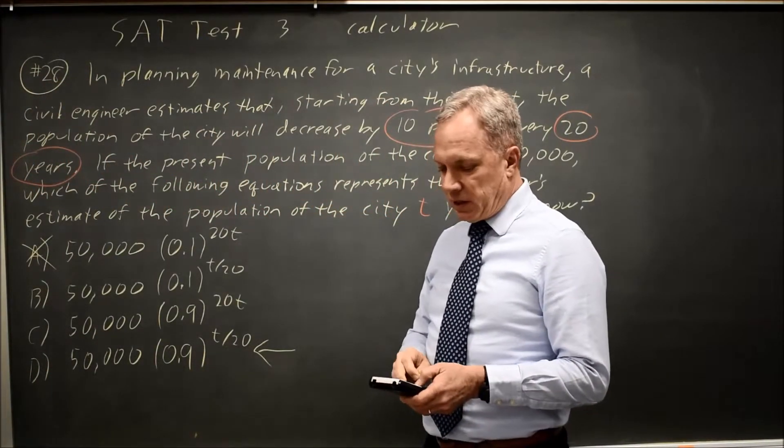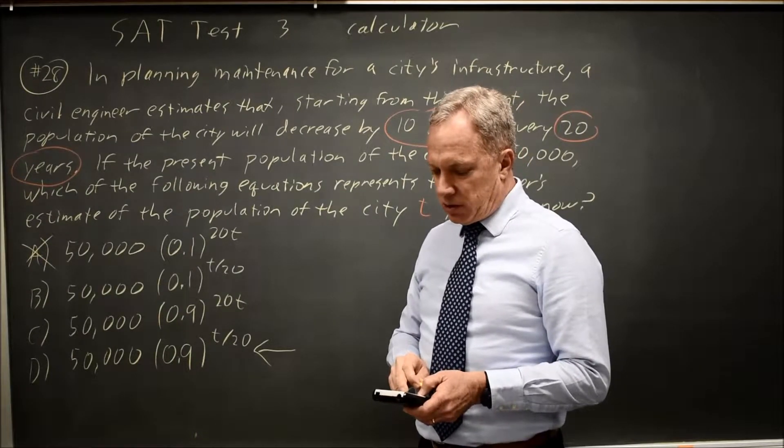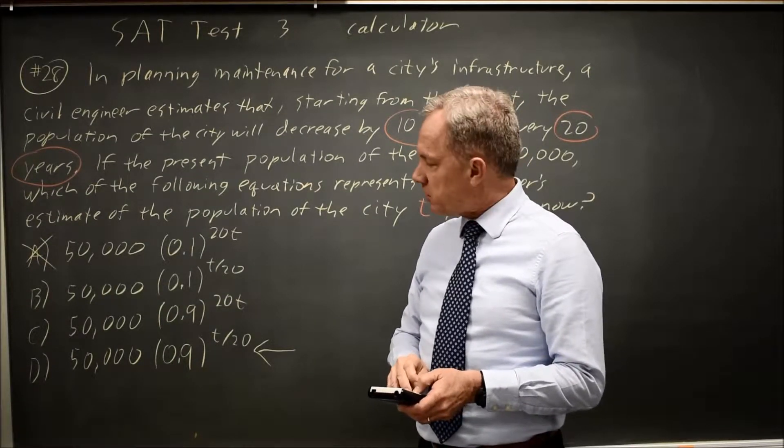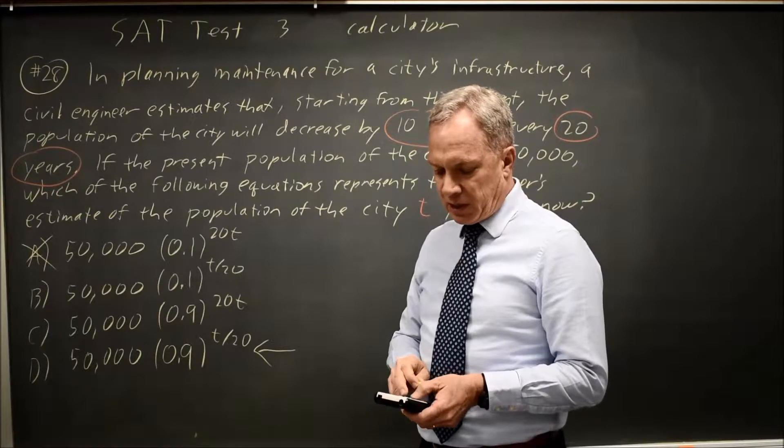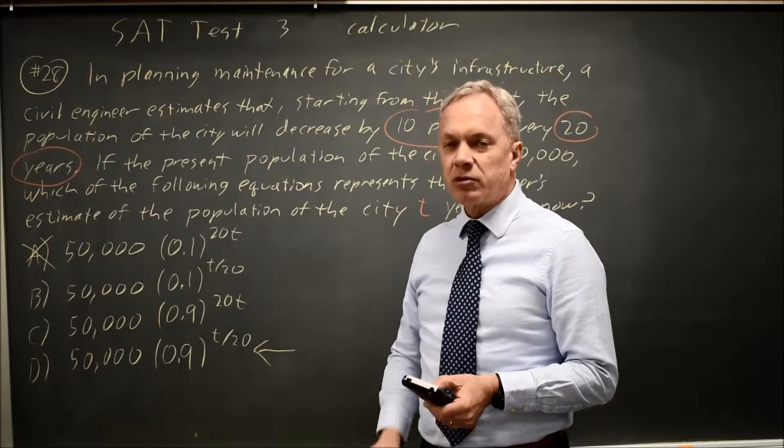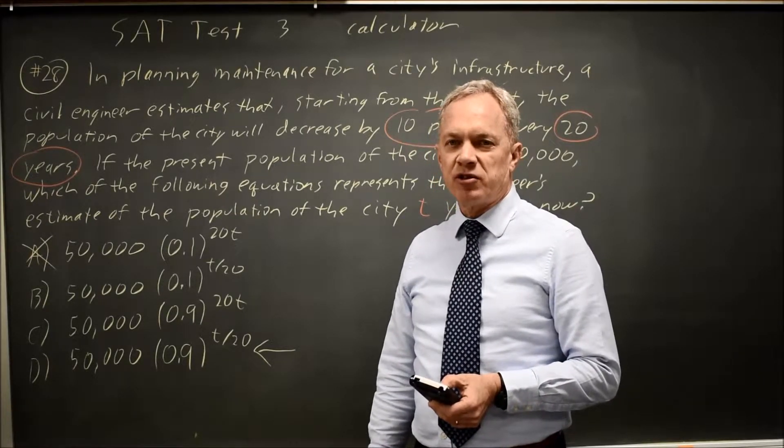What about choice B? Instead of 20t, how about t over 20? And in year 20, I have a population of 5,000 instead of 50,000.